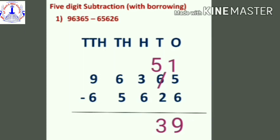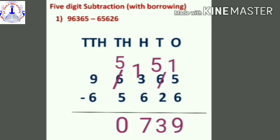Moving to the hundreds place: six minus three — you cannot do that, so the thousands place gives one to the hundreds. Three becomes thirteen, and in the thousands place six becomes five. Thirteen minus six is seven.